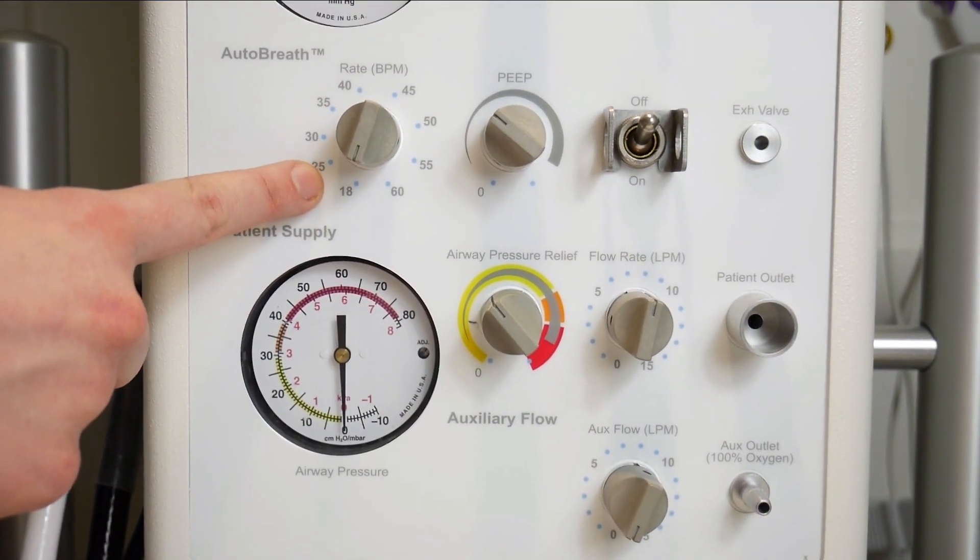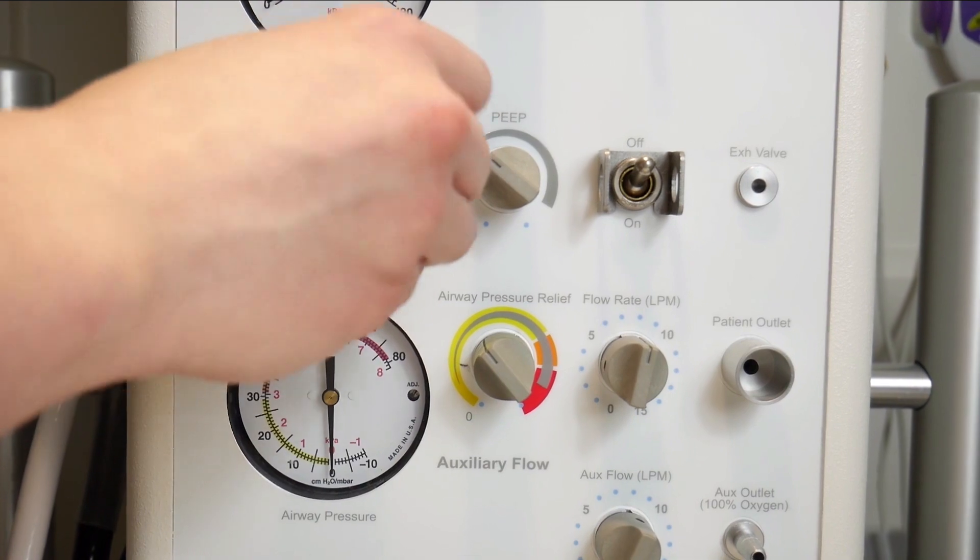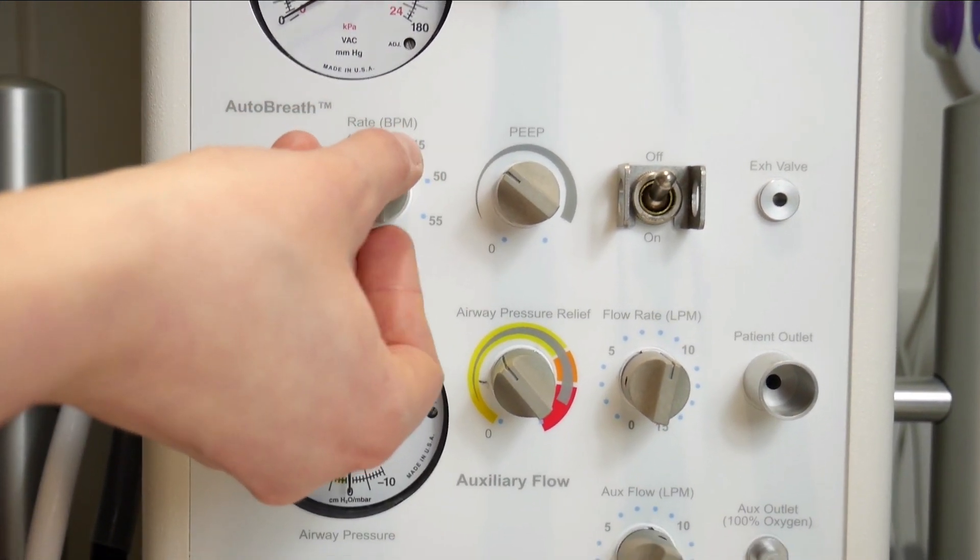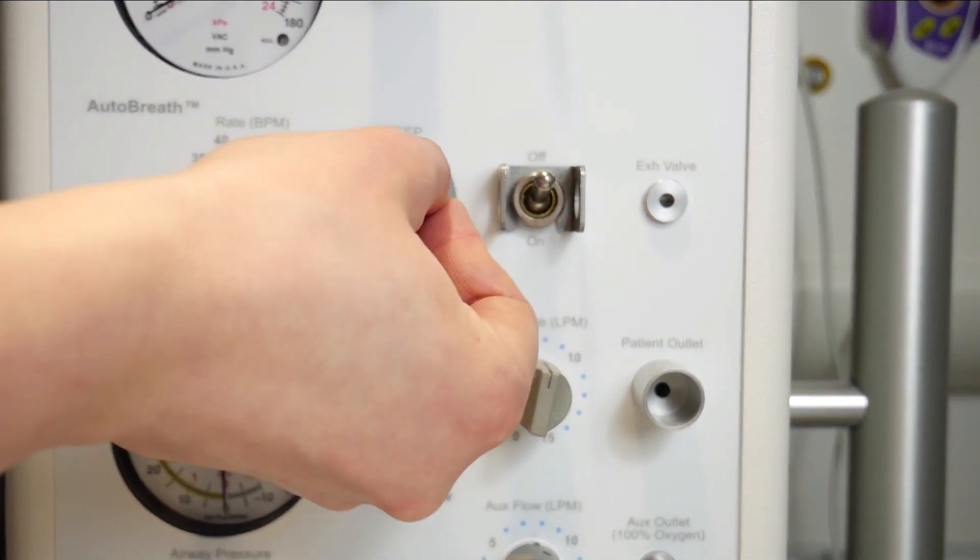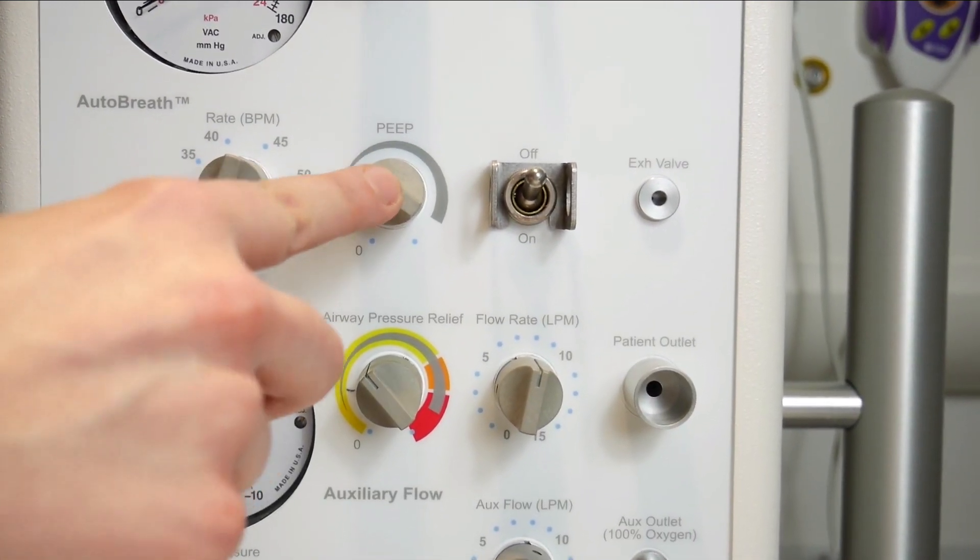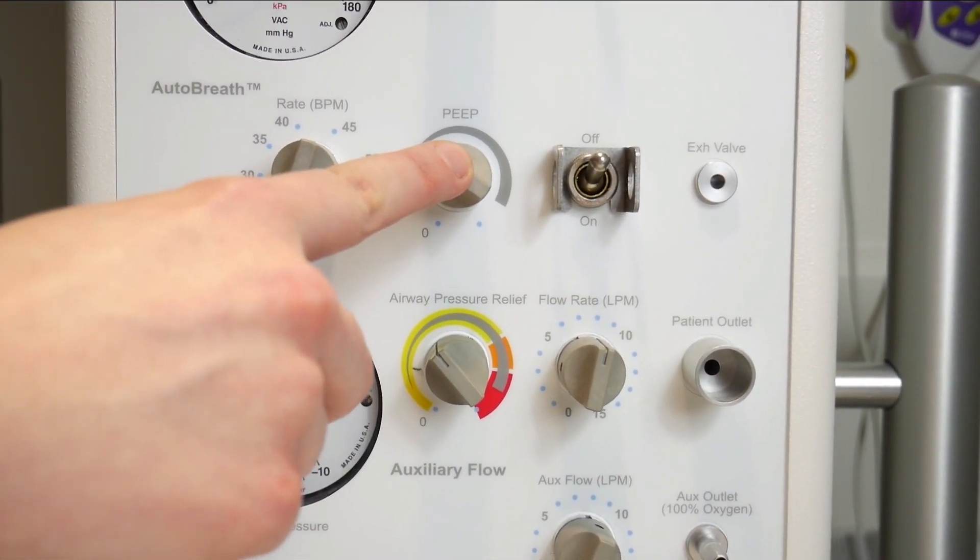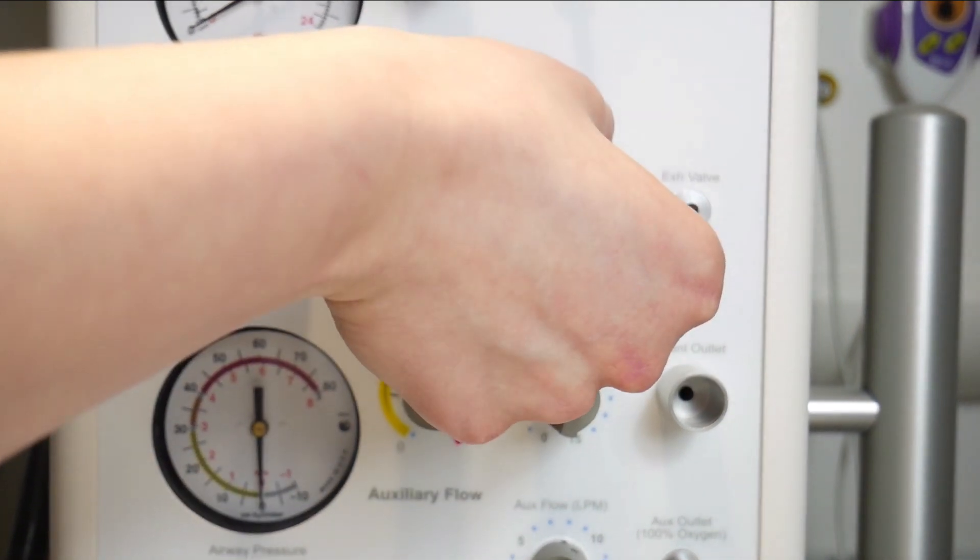Working from left to right, we have the rate. Most people start with an initial rate of 40 breaths per minute. If you're not setting the PEEP with the valve on top of the T-piece device, you can set it here. And to the right, you have the on-off switch that you turn on whenever you're using the auto breath.